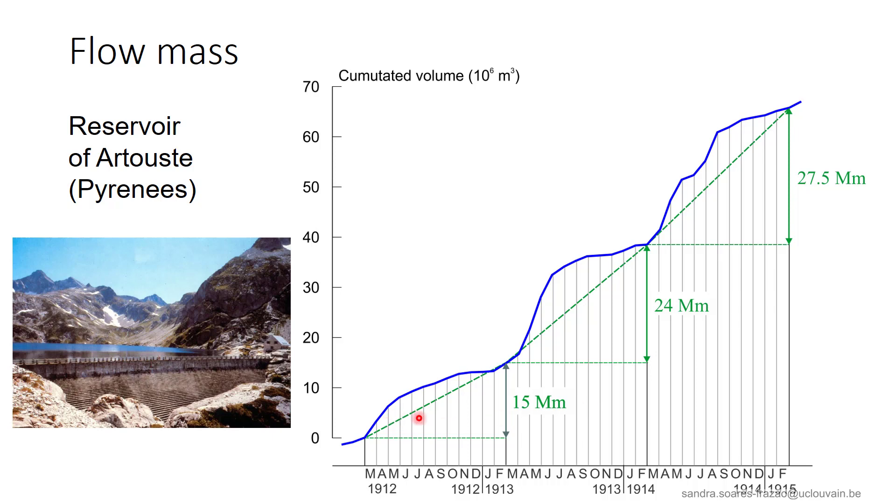The slope of the straight lines here between the beginning and the end of the mass curves for each year represents the mean discharge for these years. The same process can be conducted for the whole period of three years. The slope of the red line is the mean discharge of the three years, that is 0.7 m3 per second in the present case.